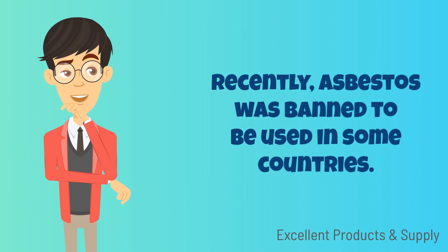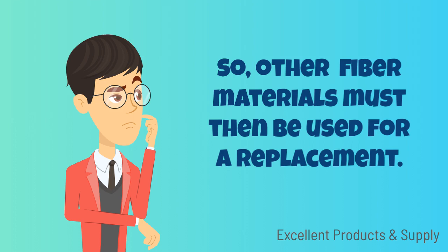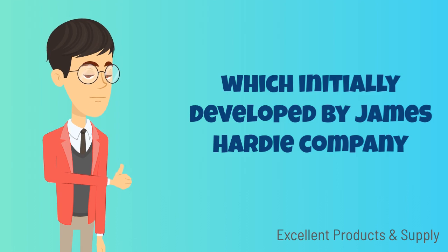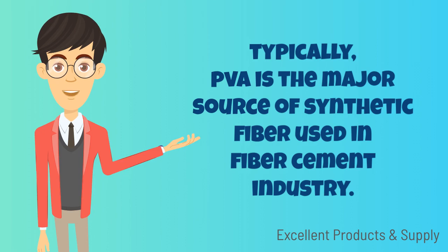Recently, asbestos was banned in some countries, so other fiber materials must be used as a replacement. Those are natural fiber from wood, and synthetic fiber, which was initially developed by James Hardy Company. Typically, polyvinyl alcohol, or PVA, is the major source of synthetic fiber used in the fiber cement industry.